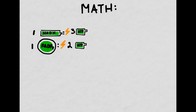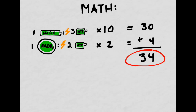If one NADH molecule can produce 3 ATP and one FADH2 molecule can produce 2 ATP, how many ATP does the electron transport chain generate in total? With the normal 10 NADHs and 2 FADH2s, you generate 30 ATP from the NADH and another 4 from the FADH2 for a total of 34 ATP. This is why the electron transport chain is the real moneymaker when it comes to making ATP in respiration.